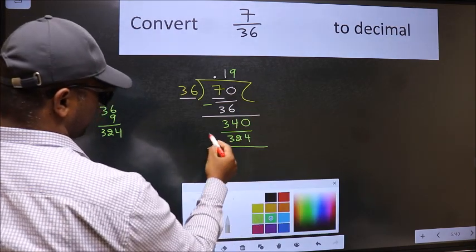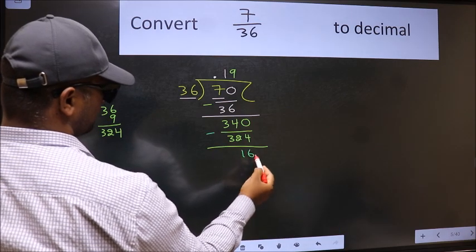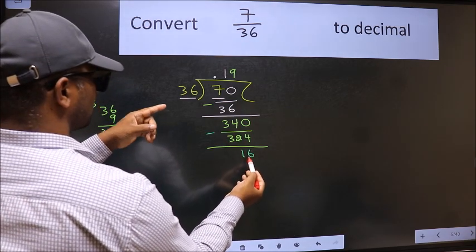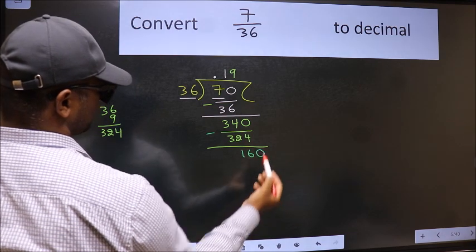Now we should subtract. We get 16. 16 smaller than 36, already have the decimal. So directly take 0.